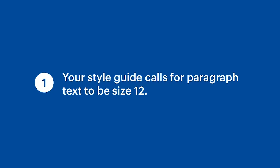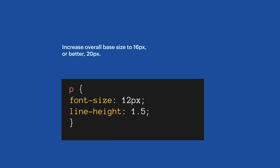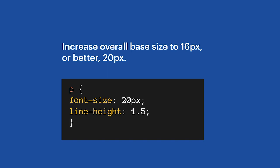Example one: your style guide calls for your paragraph type to be size 12, which is too small. The first thing to do to fix that is to increase your paragraph text to 16 — or better yet, 20 — and then make your header tags proportionally increase based on the criteria outlined in the style guide. It's important to remember that your users ultimately have control over how large the text renders on their device, so you don't want to hinge the success of your design on a specific font size, because it will break as they increase the font size.